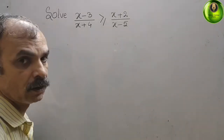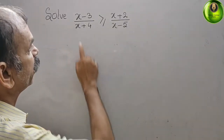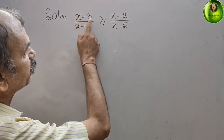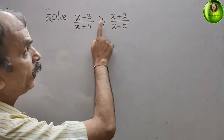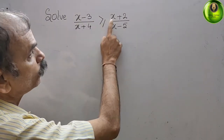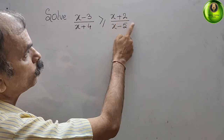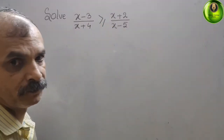Your question is: solve what we have given — (x minus 3) by (x plus 4) greater than or equal to (x plus 2) by (x minus 5).